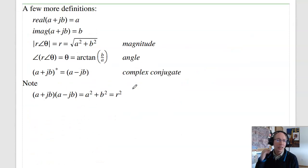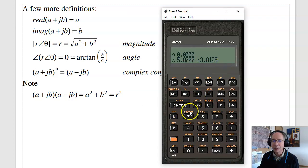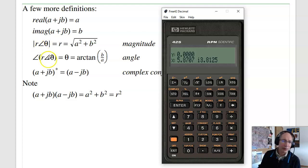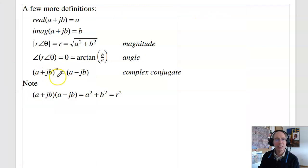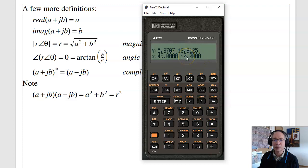A couple of definitions: the real part of a complex number is the real part; the complex part is the complex part. On the HP calculator you can pull those out using the complex key in rectangular mode. The amplitude and the angle correspond to polar form. There's also the complex conjugate — take the complex part and change its sign. A number times its complex conjugate equals the real part squared plus the complex part squared, which is the magnitude squared with no imaginary part.